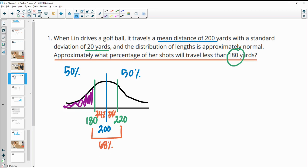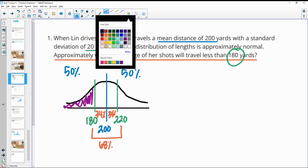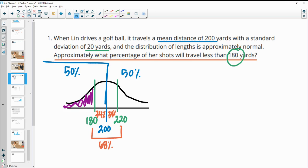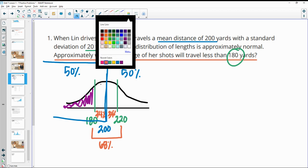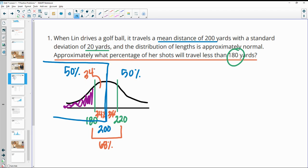The reason that that's important is if you remember, we've got 50% of our data over here. So 50% is on this side and 34% is here. So if we do 50% minus that 34%, that'll give us what's left over for this purple chunk. And so then we get about 16% of our data is going to be below the 180 or travel less than 180 yards.